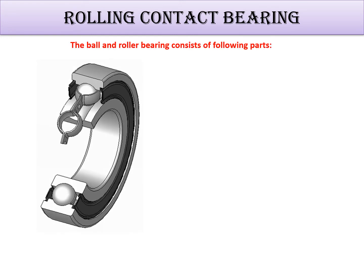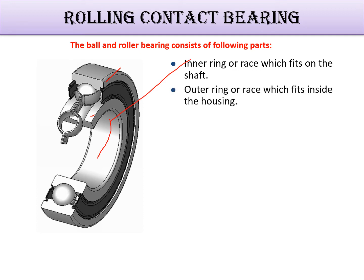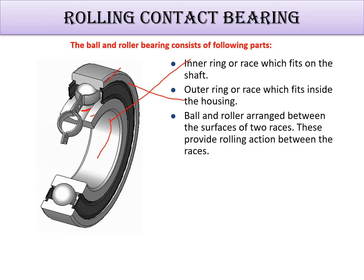This is the general bearing — a deep groove ball and roller bearing. You can see here the inner ring and the outer ring, which fits inside the housing, and the shaft is inserted here. Grooves are mounted here, and balls are arranged in these grooves. This clip helps to maintain the gap between the balls.